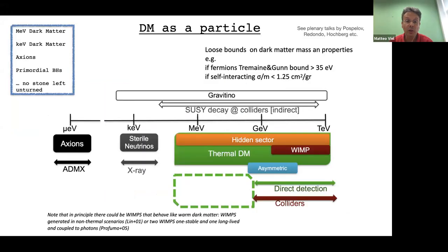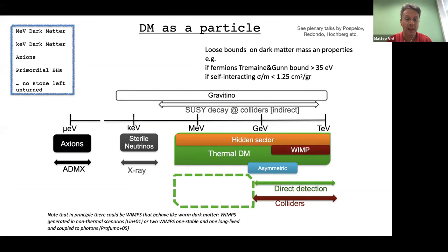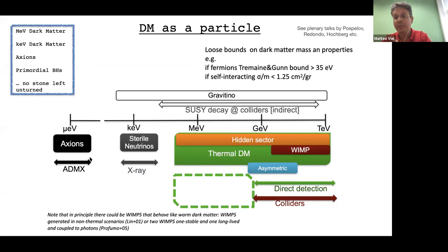From particle physics we have a huge zoo of particles, and especially after WIMPs have not been found, the panorama is quite rich. We need to keep searching and leave no stone unturned. Depending on the candidate — sterile neutrinos, lighter dark matter in the MeV range, axions, or ultralight axions — the signatures would be radically different. We need to search indirectly and directly at the best of our capabilities with simulations and theories that are good enough.